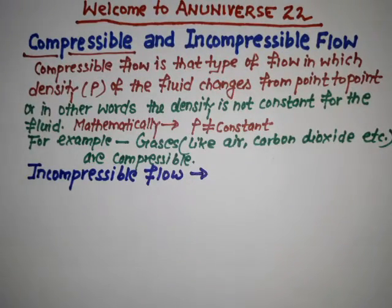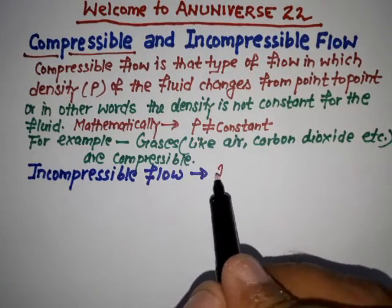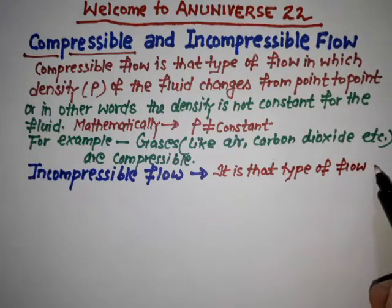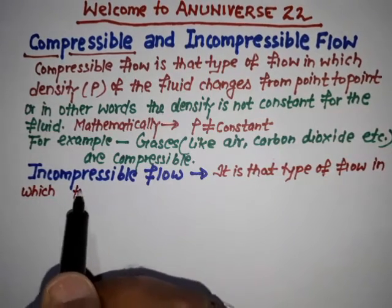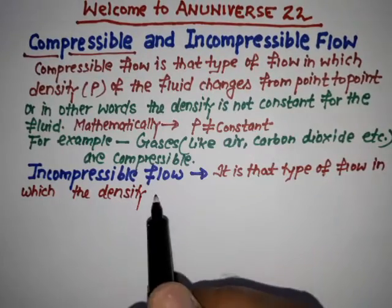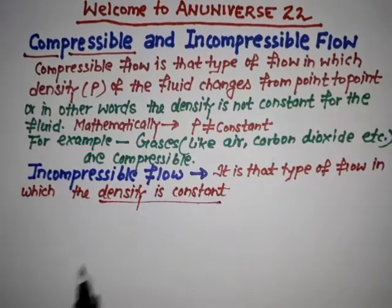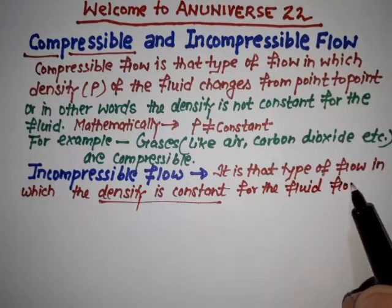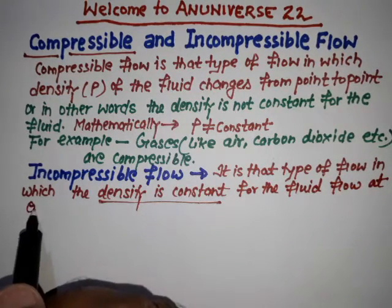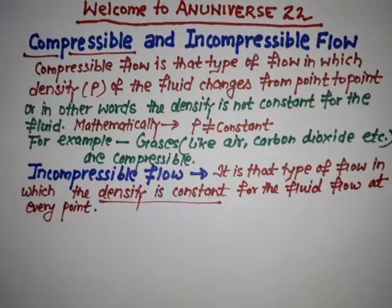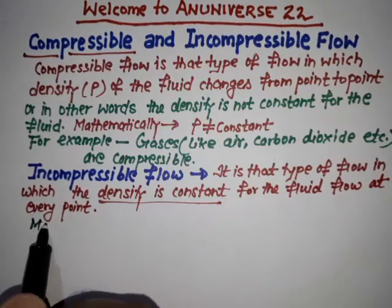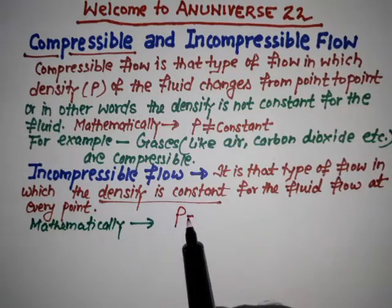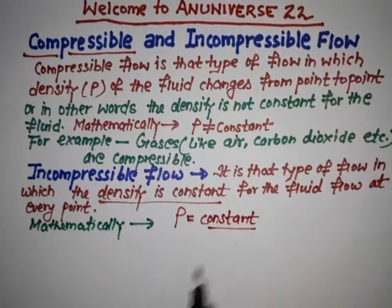Now, incompressible flow is that type of flow in which the density is constant for the fluid flow at every point. Mathematically it can be written as rho is constant.